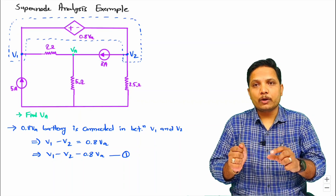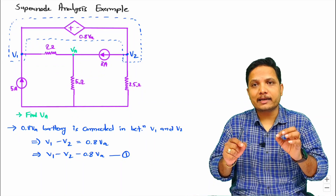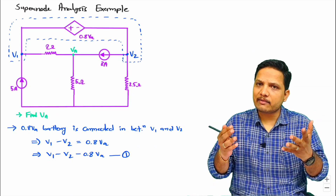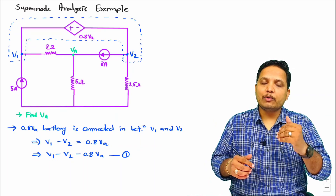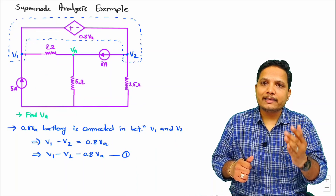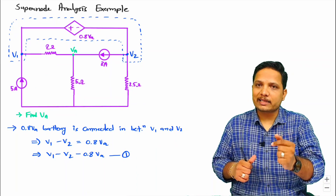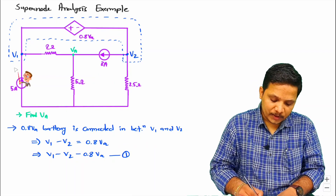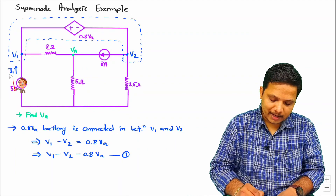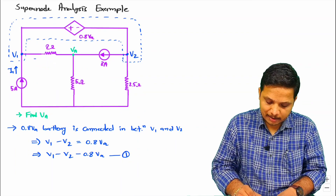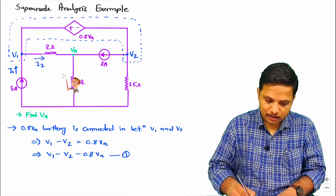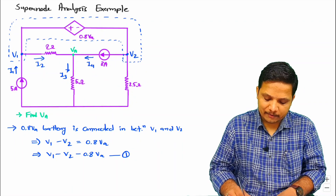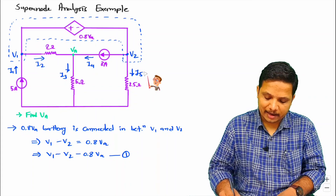When we talk about supernode, V1 and V2 are considered combinedly as a single node, referred to as the supernode. To apply Kirchhoff's current law (KCL) to the supernode, I'll explain step by step. First, we need to consider the direction of current randomly. So I am considering currents I1, I2, I3, I4, and I5 at the respective branches.